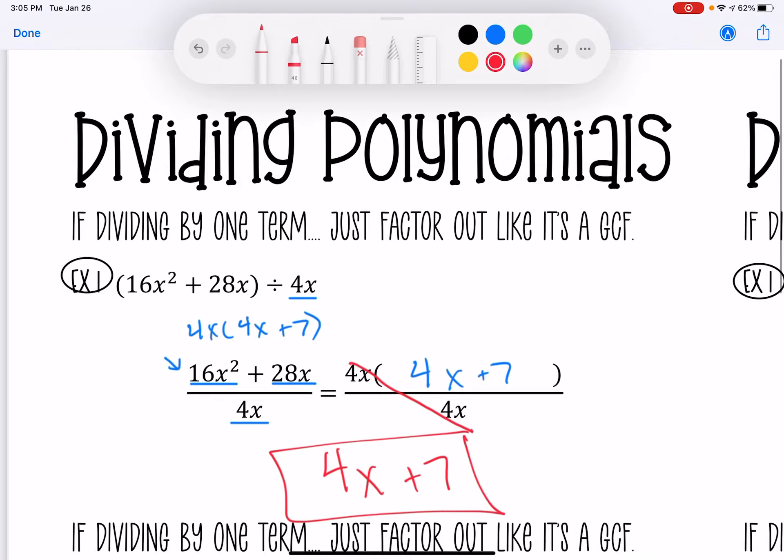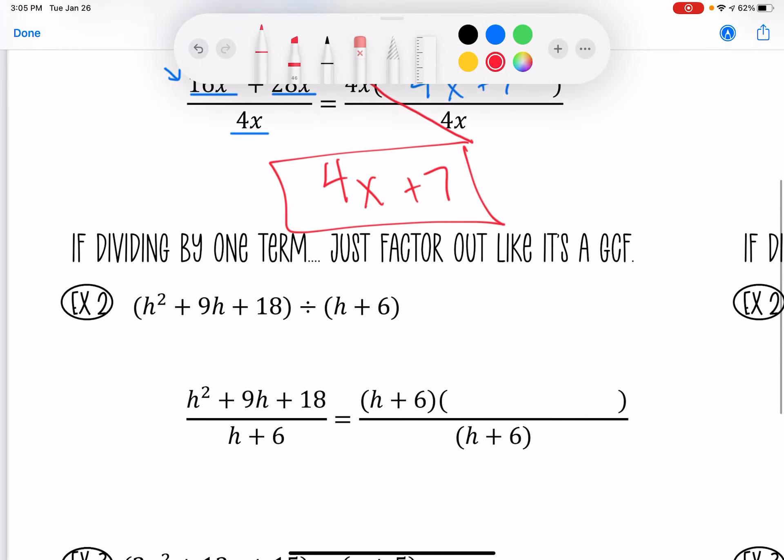You might say, well Ms. Samji, we don't always just have monomials. We also have binomials. Now, if you're dividing it by one term, factor it out like a GCF, or you can just reverse box it. I know we haven't really done the reverse box as much, but this is really helpful when you're working on it.